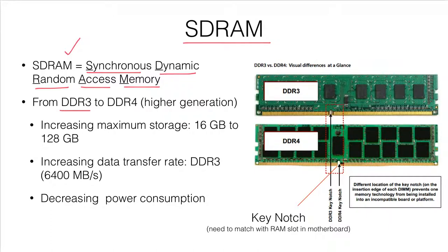DDR3 is still the most common type of SDRAM, even though DDR4, a higher generation SDRAM, is available in the market. The market is migrating from DDR3 to DDR4. The maximum storage will be increased from 16 gigabytes to 128 gigabytes, and the data transfer rate will also be increased. The DDR3 data transfer rate is about 6400 megabytes per second.